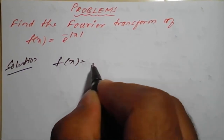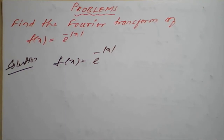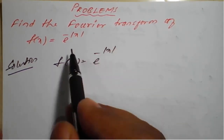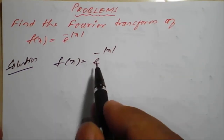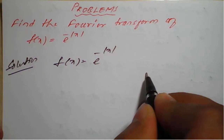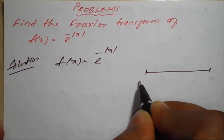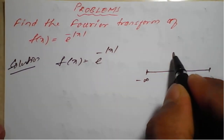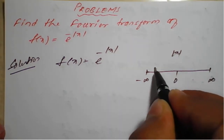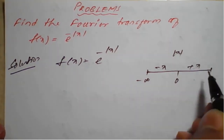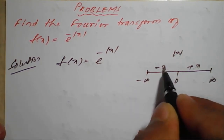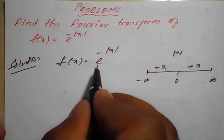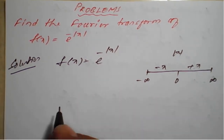The given function is e raised to minus mod x. Since no interval is given, we need to determine the limits. For mod of x, we split at 0: for minus infinity to 0, mod x equals minus x, and from 0 to infinity, mod x equals plus x.